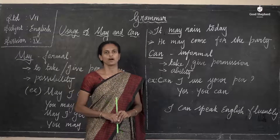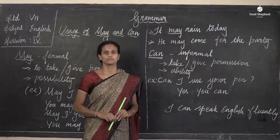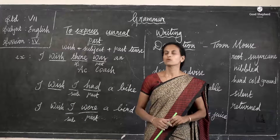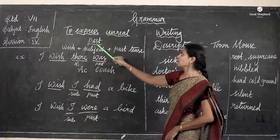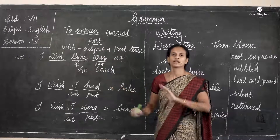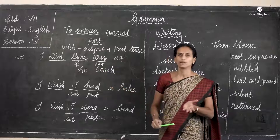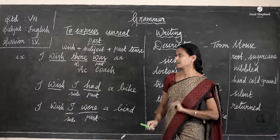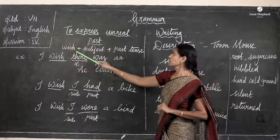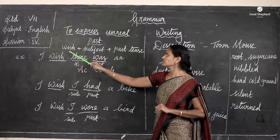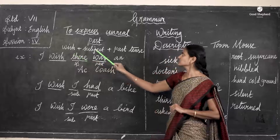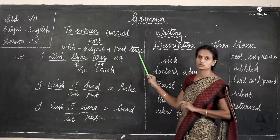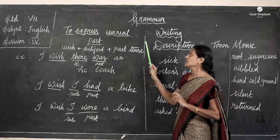I hope you have understood. Now we are going to see how to express the unreal past — an action that did not happen but you wish it had. The formula is: wish + subject + past tense.